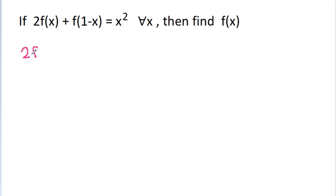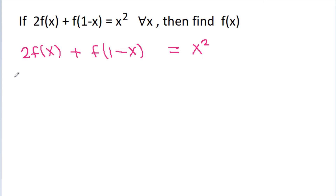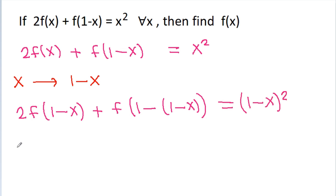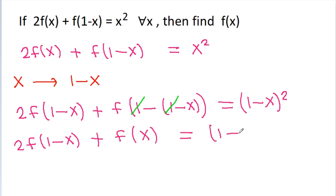We have given that 2f(x) plus f(1-x) is equal to x squared. If we replace x with (1-x), then we get 2f(1-x) plus f(x) is equal to (1-x) squared. Here 1 minus 1 will get cancelled, and we get f(x) is equal to (1-x) squared.